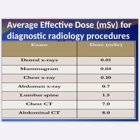Average effective doses for common diagnostic radiology procedures: dental X-rays 0.02 mSv, mammogram 0.04 mSv, chest X-ray 0.10 mSv, abdomen X-ray 0.7 mSv, lumbar spine 1.5 mSv, chest CT 7.0 mSv, abdominal CT 8.0 mSv.